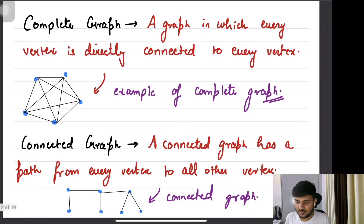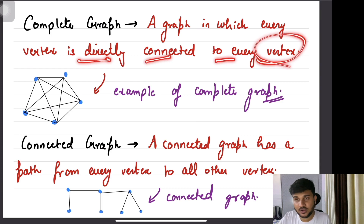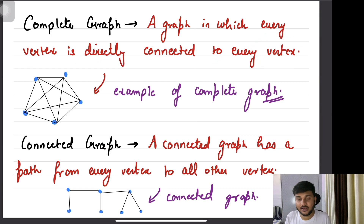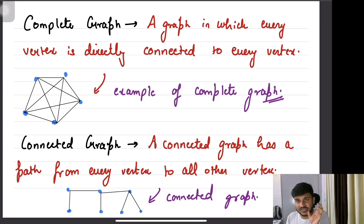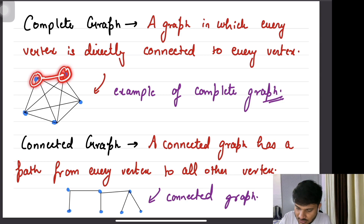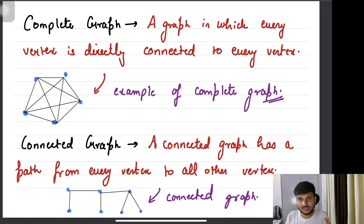Now what's a complete graph? A graph in which every vertex is directly connected to every other vertex. Every vertex is going to have every other vertex as its adjacent because there will be an edge present between every two vertices. So here you can see if you take any two vertices, there is an edge. Every two vertices are going to have an edge between them.